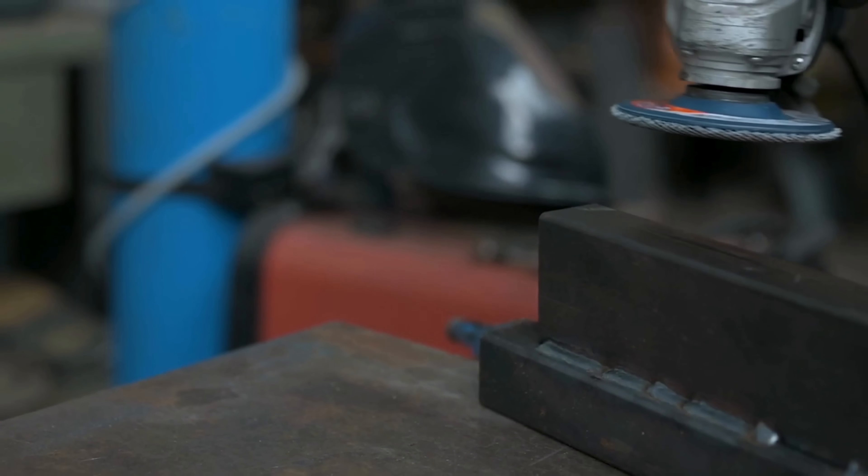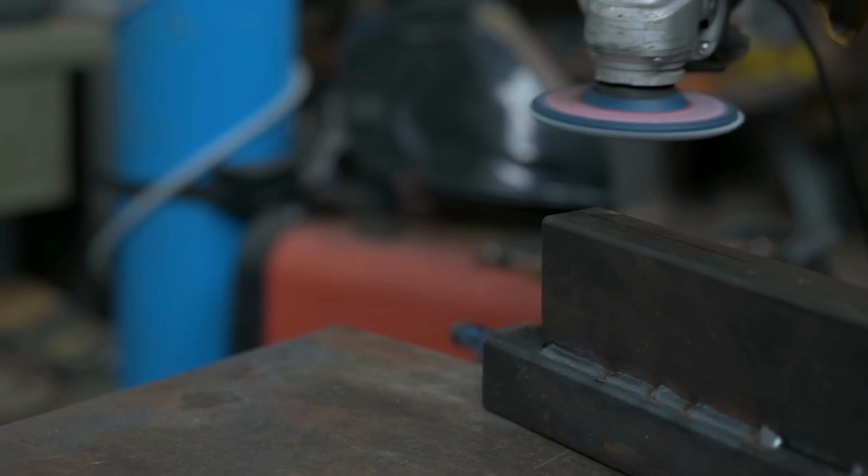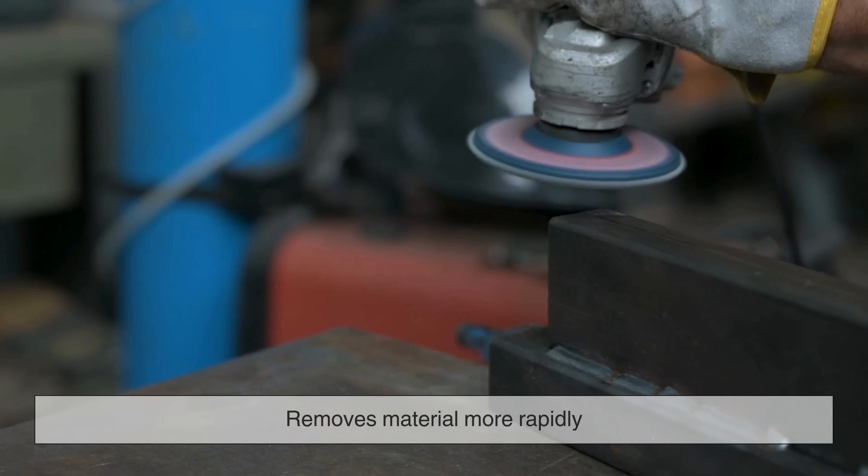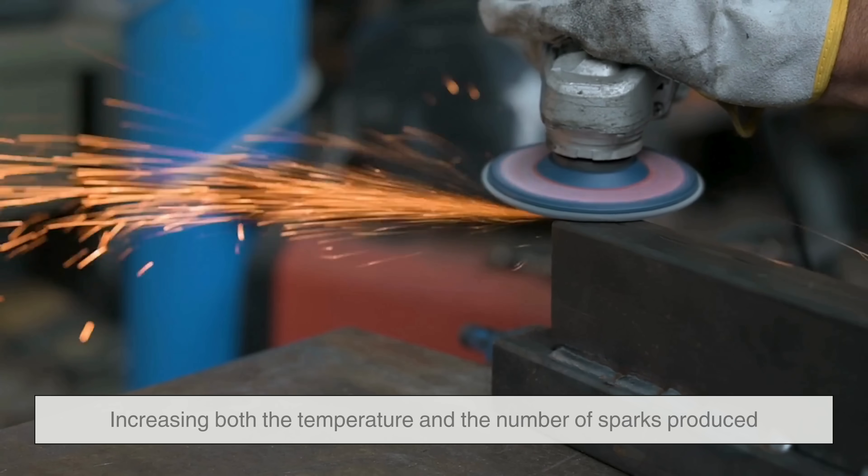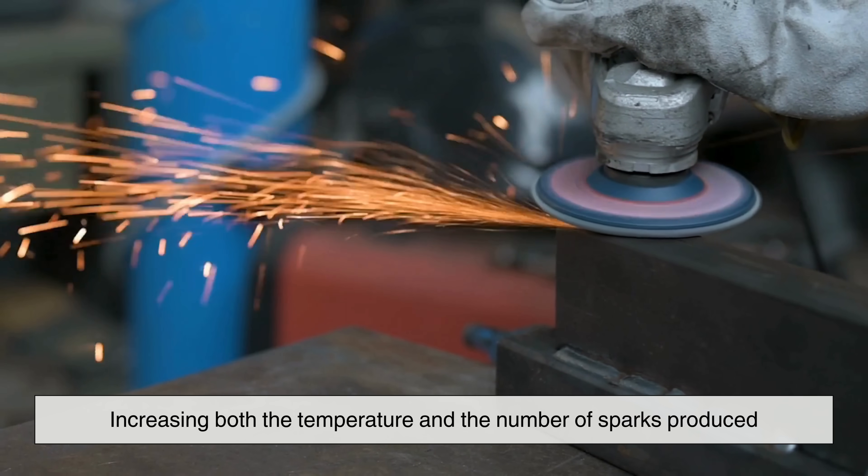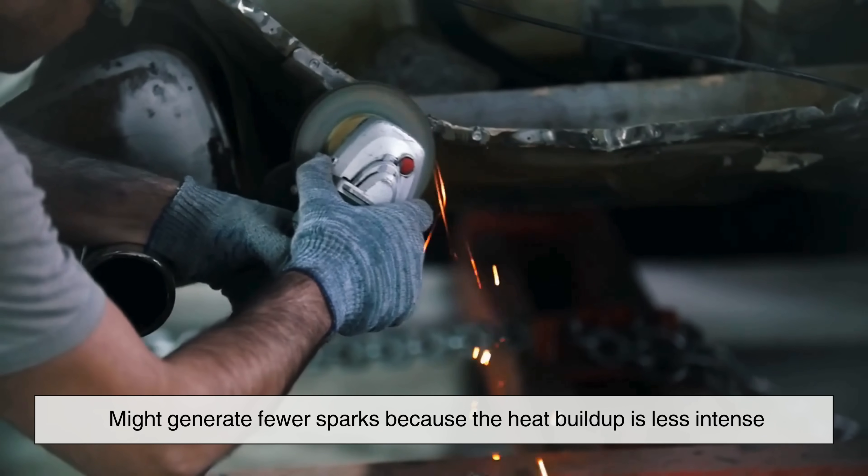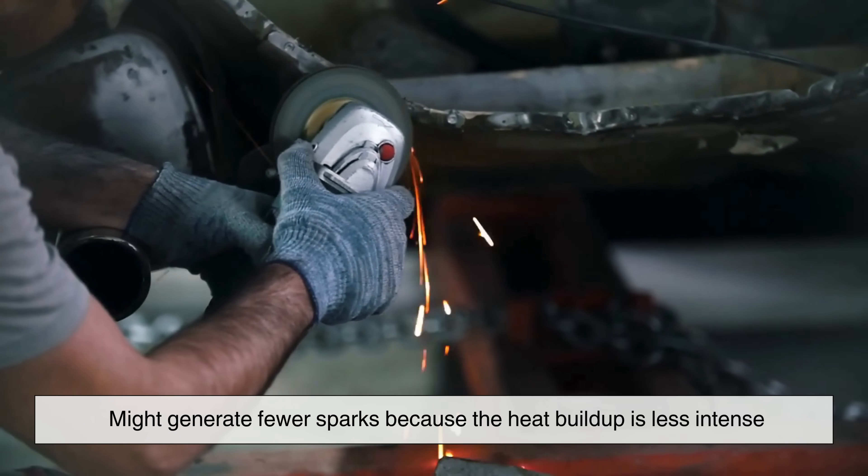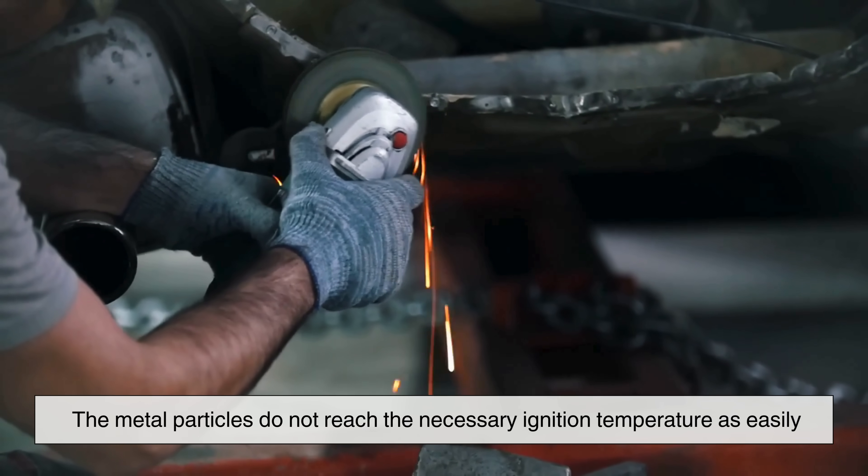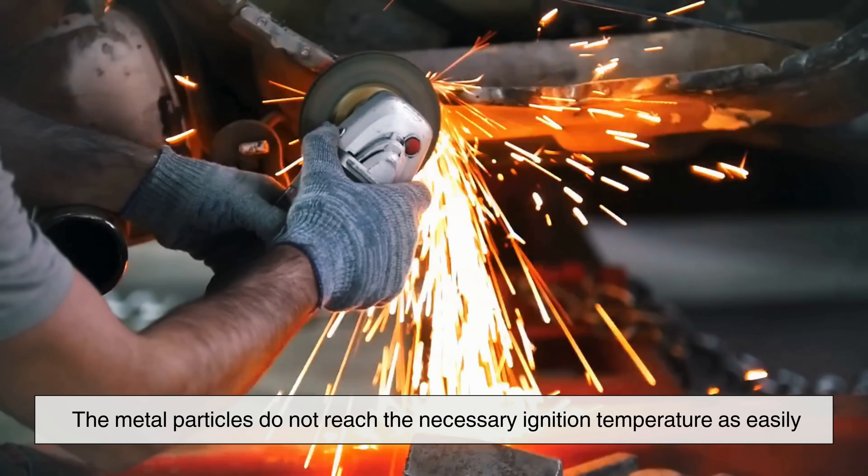The speed of the grinder is another crucial factor. A high-speed grinder removes material more rapidly, increasing both the temperature and the number of sparks produced. Conversely, a slower grinder might generate fewer sparks because the heat buildup is less intense, and the metal particles do not reach the necessary ignition temperature as easily.